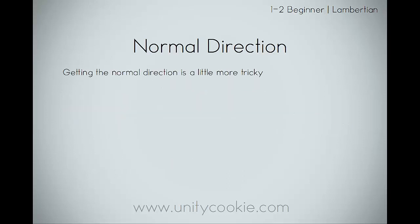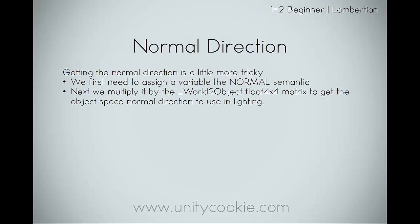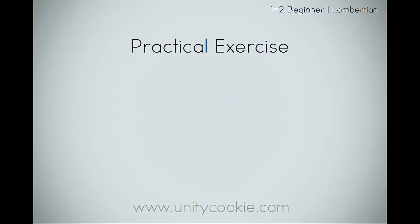Getting the normal direction is a little more tricky. We first need to assign a variable with the normal semantic. We remember semantics from part one, when we covered how to work with the position semantic — normal works the same way. Next, we multiply that semantic by the world-to-object float4x4 matrix to get the object space normal direction to use in lighting. We'll do this in the vertex program for vertex lighting, and we can also do it in the fragment program for per-pixel lighting.